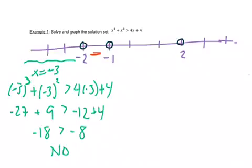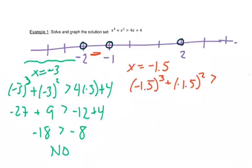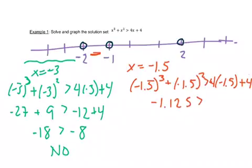Now let's look at this part right here — we have to choose something that's between negative 1 and negative 2, so maybe negative 1.5. It's a messy number, but you can use your calculator. We're trying to see if we put that in, do we get something that's true? When I do the left side on my calculator, I get negative 1.125. I'm trying to see, is that bigger than the right side? On the right side I get negative 2. Well, negative 1.125 is bigger than negative 2, so this is a yes. So I want to shade this part in between there.